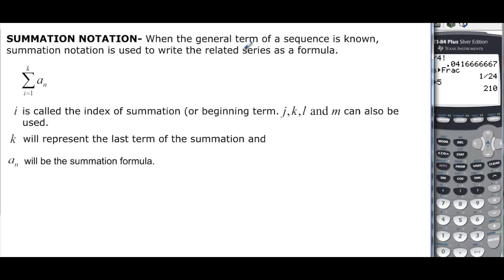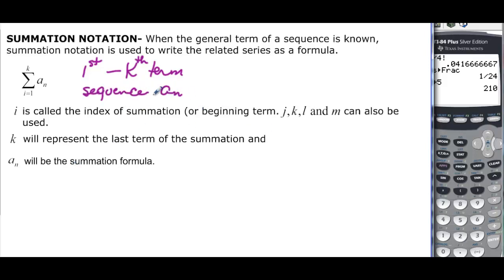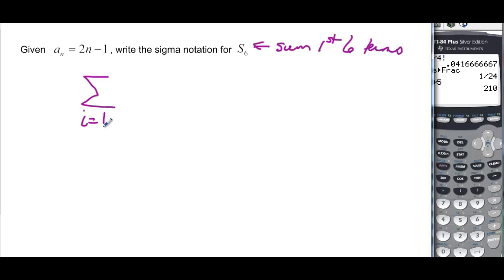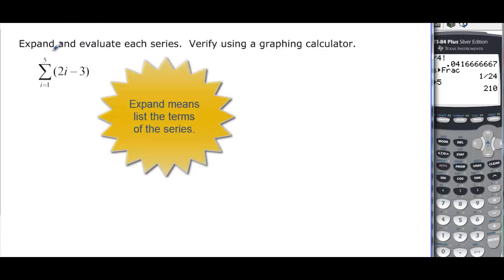Now, summation notation. When the general term of a sequence is known, summation notation can be used to write the related series in a formula. We have sigma notation with i equal to 1 on the bottom and k on top, telling us we want to sum from the first term to the k-th term. The letters i, j, k, l, m are the ones usually used. Given a sub n, we want to write the sigma notation for s sub 6, which means we sum the first 6 terms. So we write sigma from 1 to 6 of 2n minus 1.